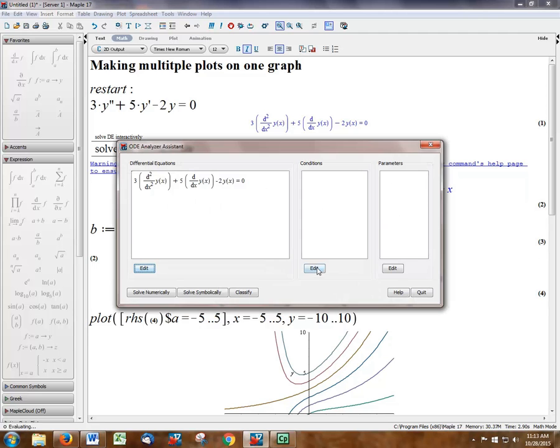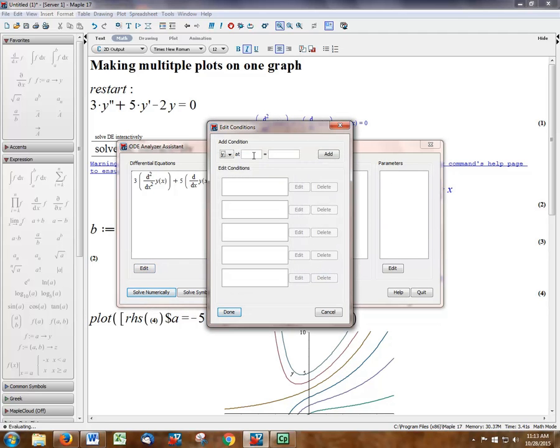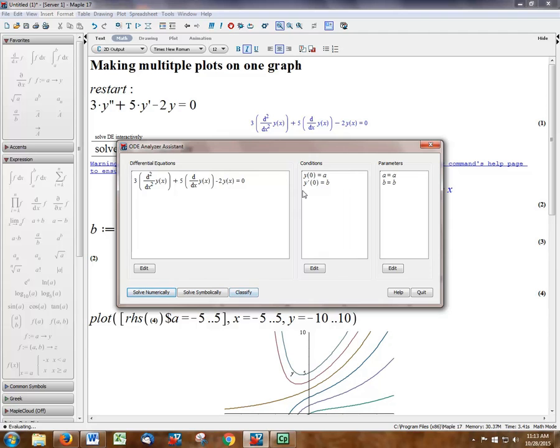Alright, so now you've got to put our initial conditions in. The function of y at x equals zero needs to be equal to a, so I'm going to add that. And then the derivative of the function of y at x equals zero has to be equal to b. And I'm going to add that. And then I'm done. So I have my two conditions.